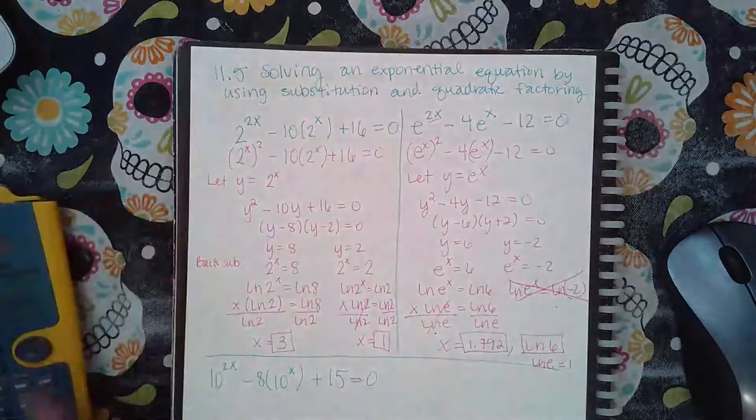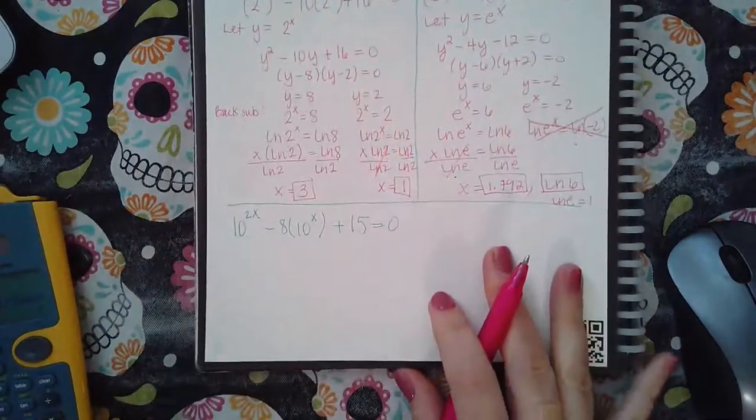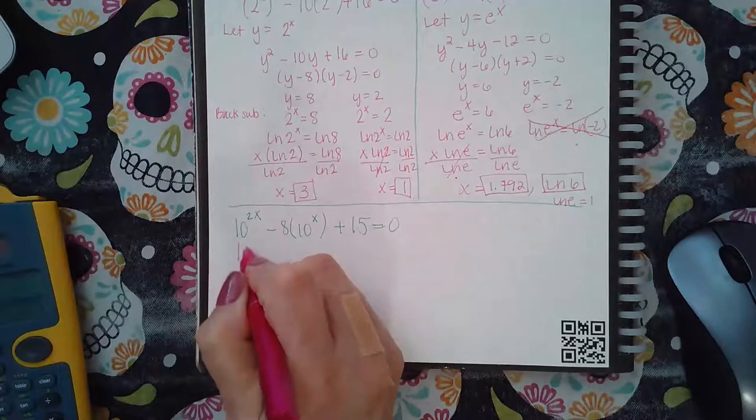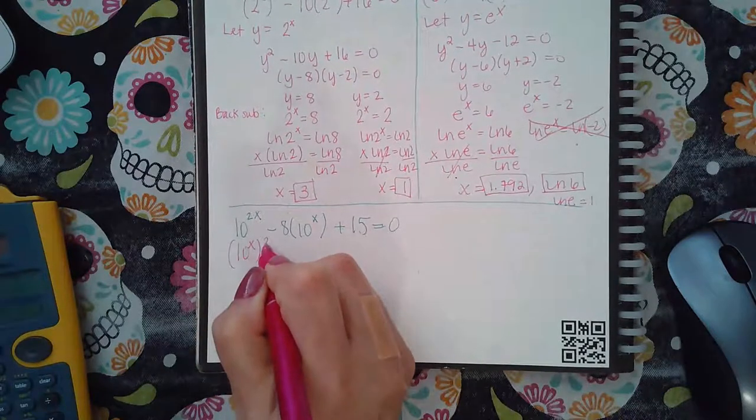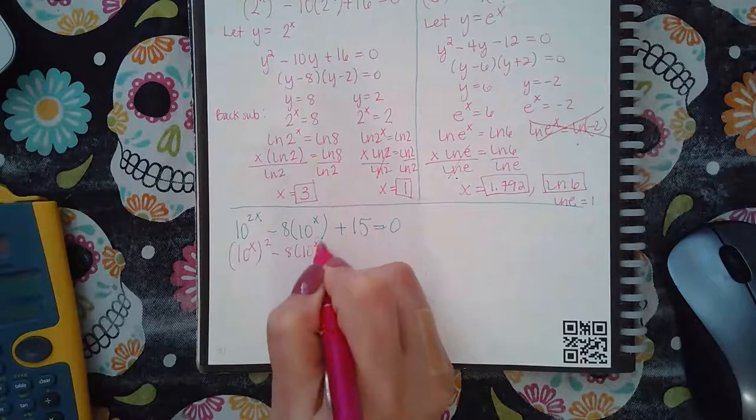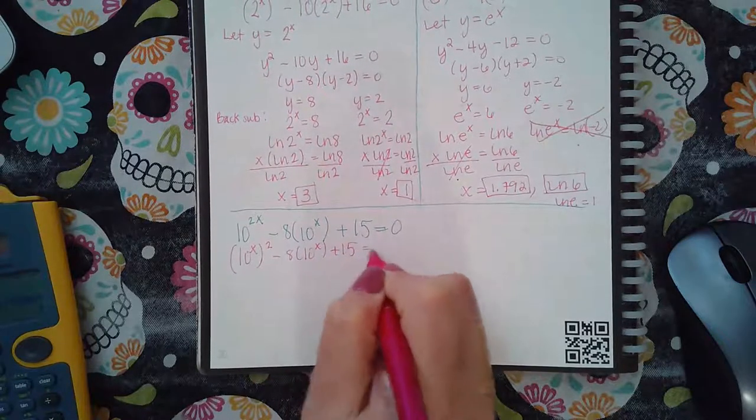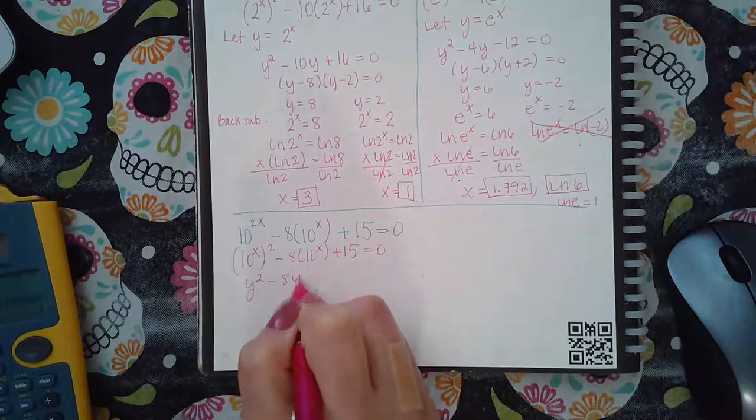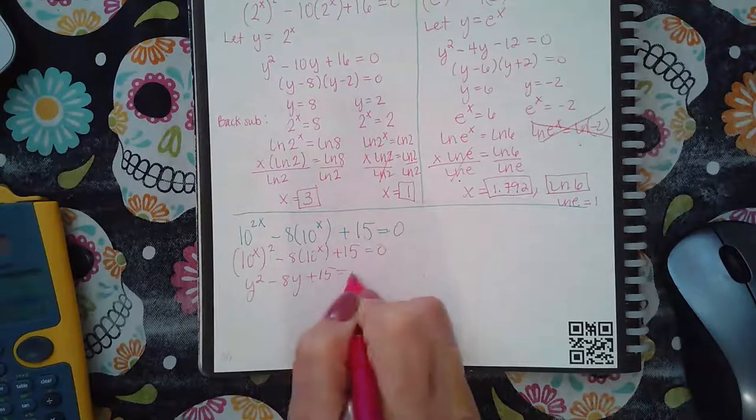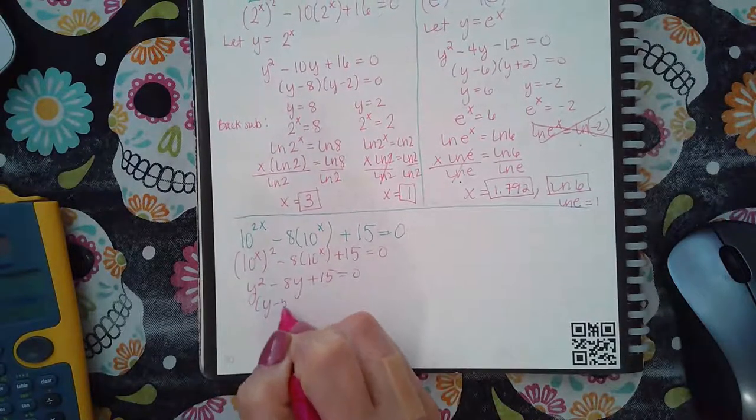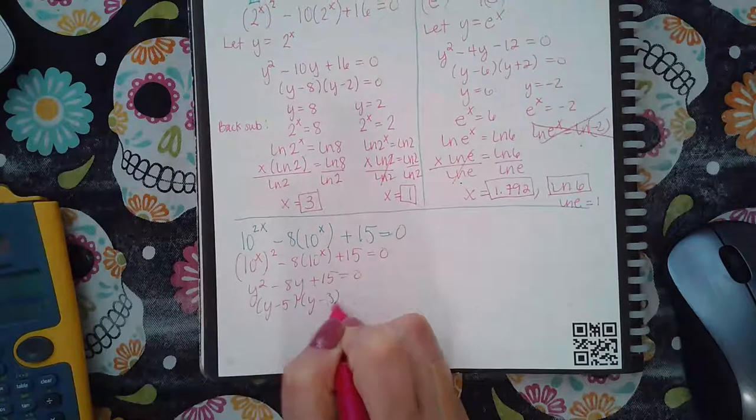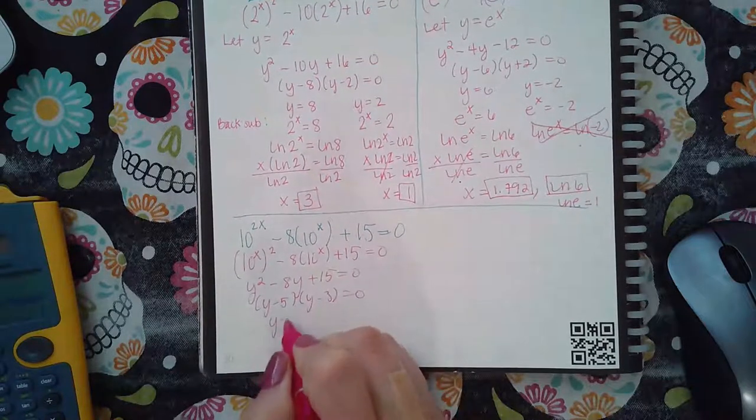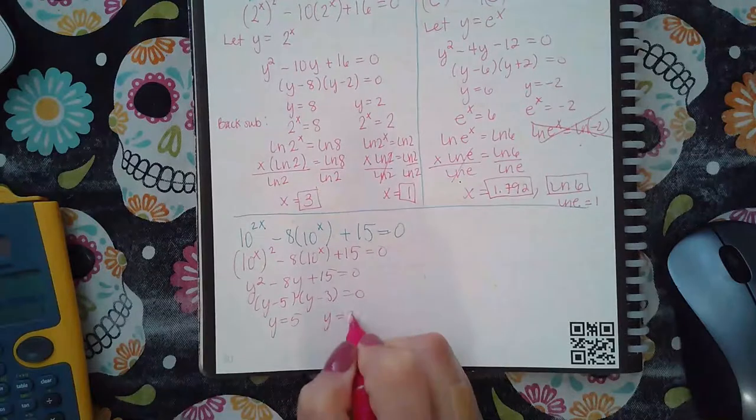Now, similarly for this problem, again, I can write that as 10 to the x squared. And so then I can replace the x with the y. So y squared minus 8y plus 15. So I get y minus 5, y minus 3 equals 0. So we get y equal to 5 and y equal to 3.